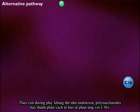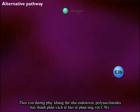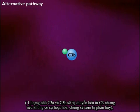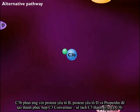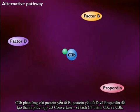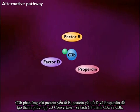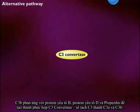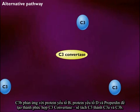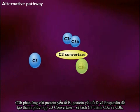In the alternative pathway, antigens such as endotoxin, polysaccharides, or cell wall components react with C3B. Small amounts of C3A and C3B are constantly being formed from C3, but without activation they are soon destroyed. C3B reacts with the proteins factor B, factor D, and properdin to form a complex called C3-convertase, which cleaves C3 into C3A and C3B.